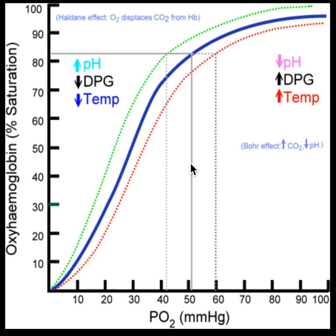Let's think about some of the things that cause changes in the behavior of hemoglobin. We already talked in the previous video about how hemoglobin changes its behavior as oxygen levels change around it. Well, hemoglobin actually shifts left and right depending on some other things around it as well: pH, DPG, and temperature.